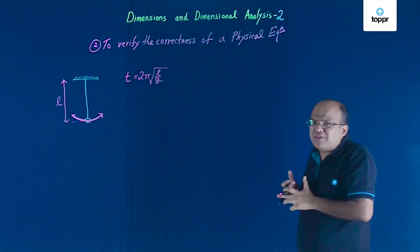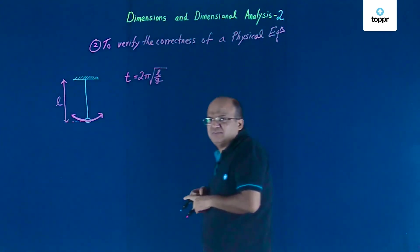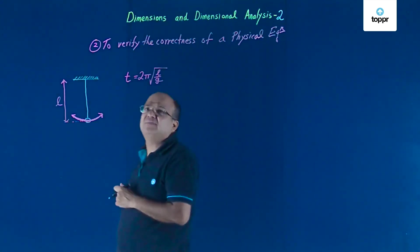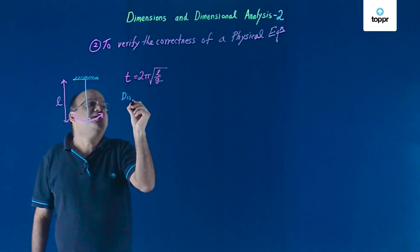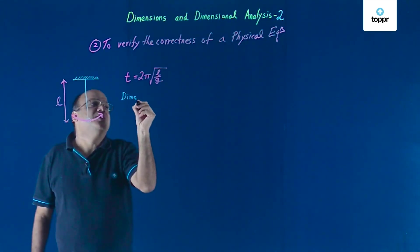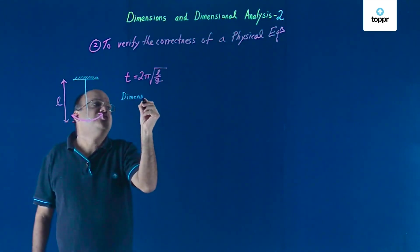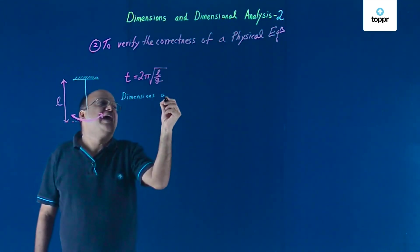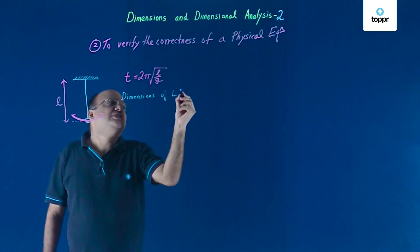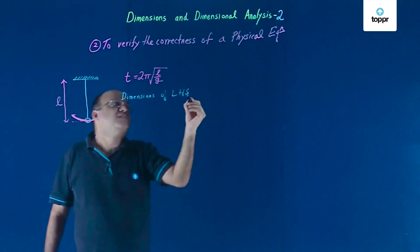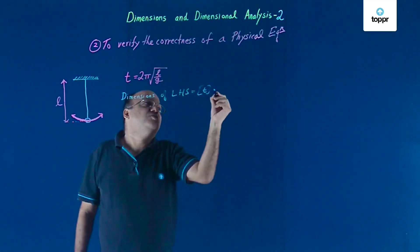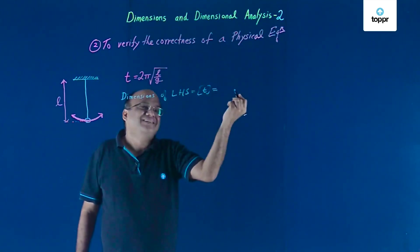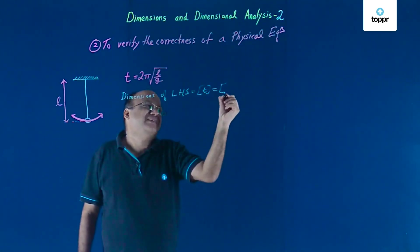Let us verify whether this is correct. We look at the dimension of the left hand side. On the LHS you have only T, so the dimension will be capital T. That is the dimension of the LHS — simple.